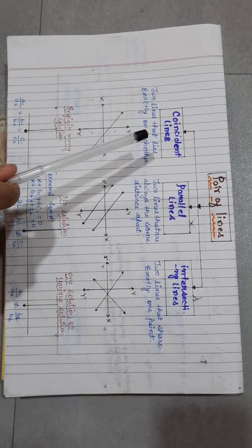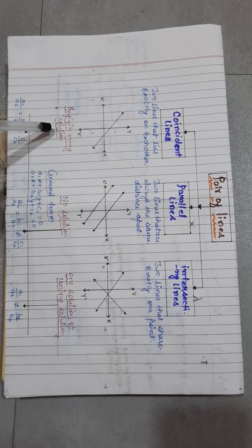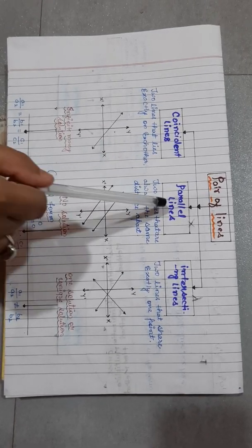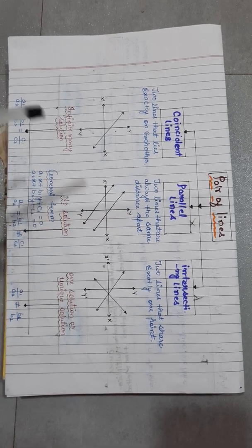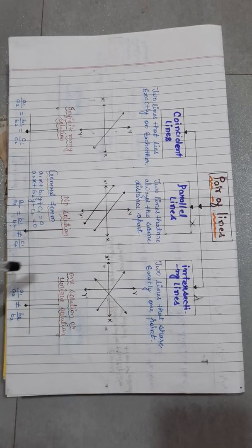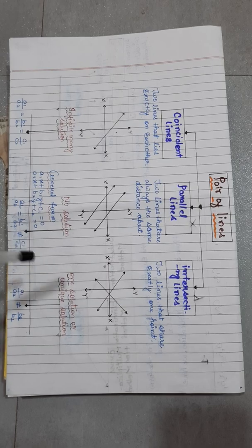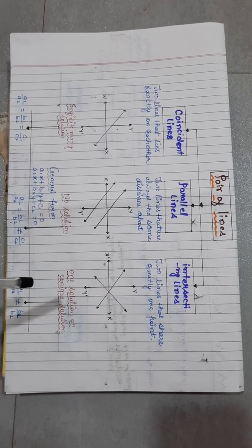So in coincident lines, there is an infinite number of solutions. In parallel lines, there is no solution. In intersecting lines, there is exactly one solution, or a unique solution.